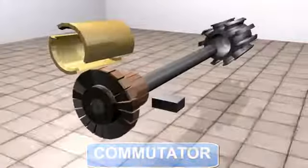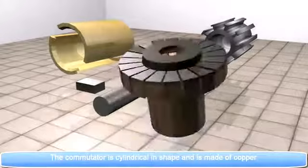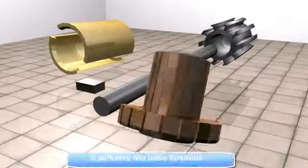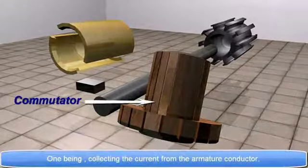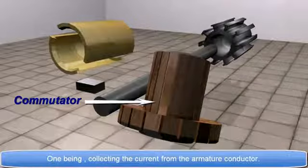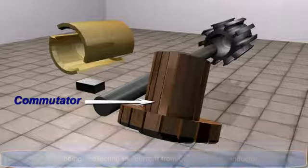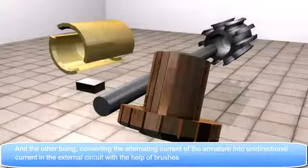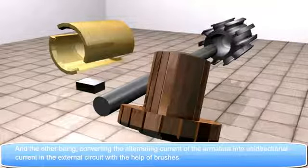Commutator. The commutator is cylindrical in shape and is made up of copper. It performs two basic functions. One being collecting the current from the armature conductor. And the other being converting the alternating current of the armature into the unidirectional current in the external circuit with the help of brushes.